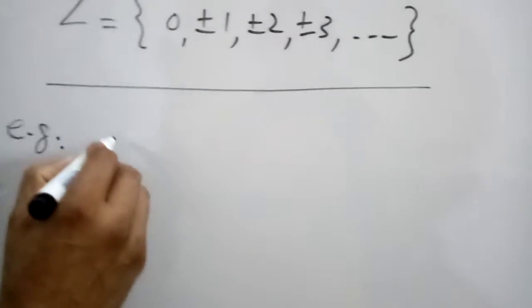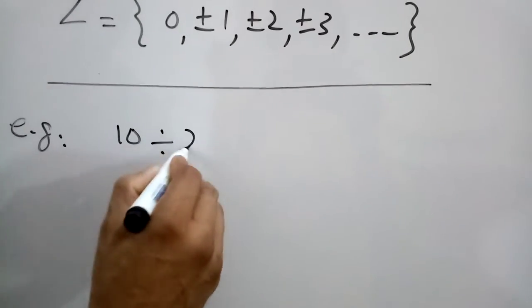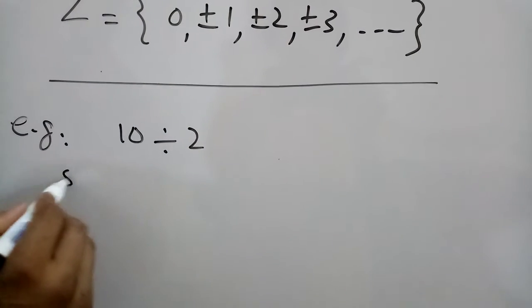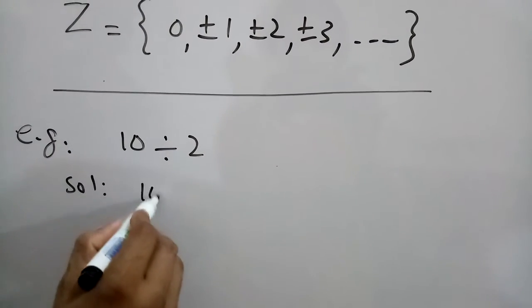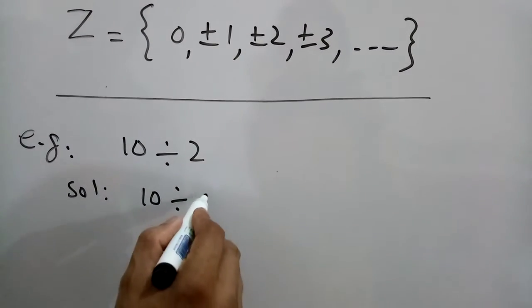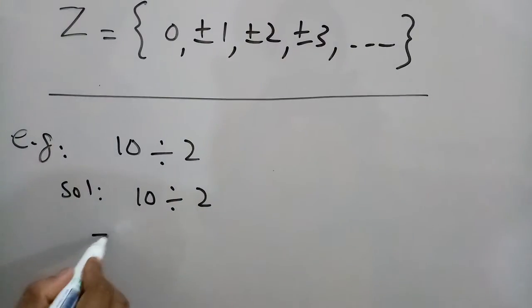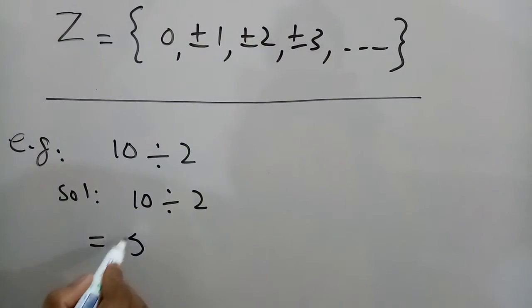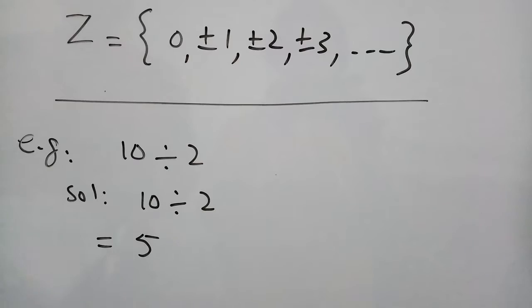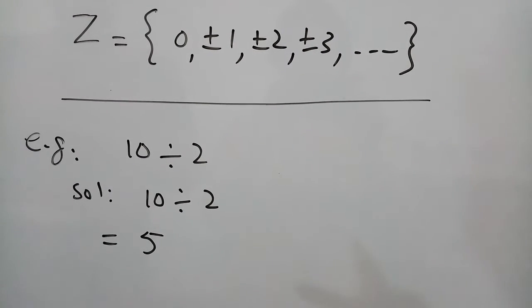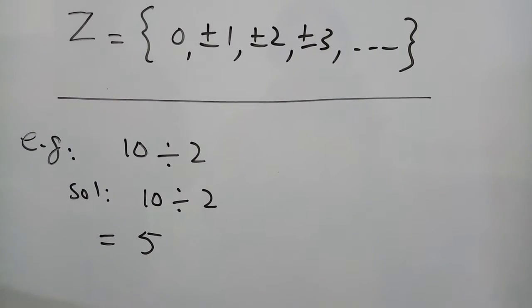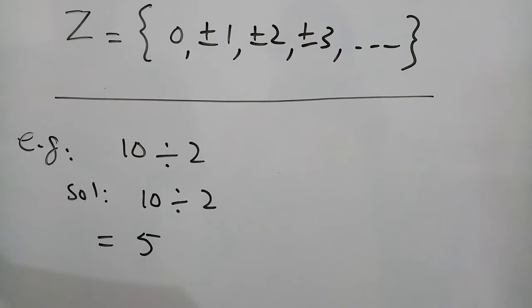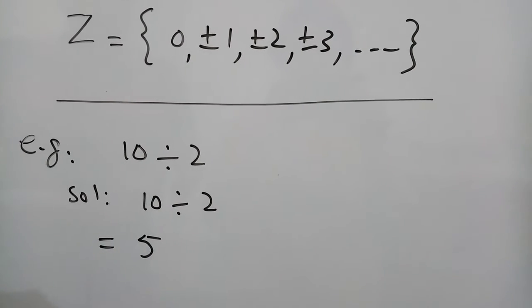Example is 10 divided by 2. When 10, a natural number, is divided by 2, also a natural number, the result is 5, and 5 is also a natural number. This is the first statement that we have learned: when a natural number is divided by a natural number, the result is a natural number.